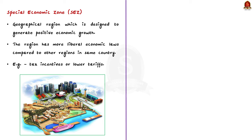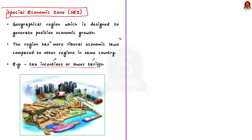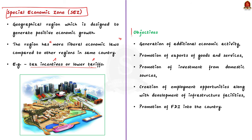A Special Economic Zone or SEZ is a geographical region designed to generate positive economic growth in the country. This region has more liberal economic laws vis-à-vis other areas — that is, more favorable economic regulations compared to other regions. For example, the government provides tax incentives or opportunity to pay lower tariffs in such areas. The main objectives of SEZ include generation of additional economic activity, promotion of exports, promotion of investment from domestic sources, creation of employment opportunities, development of infrastructural facilities, and promotion of foreign direct investment or FDI.